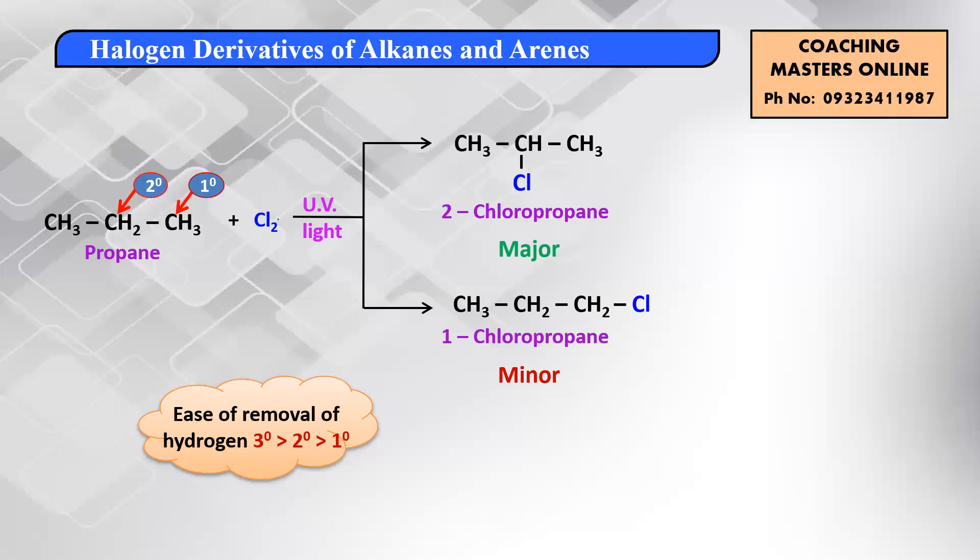This ease of hydrogen removal — tertiary > secondary > primary — is a very important rule to remember. When you understand the mechanism module next, this will become clearer. To summarize: if substitution is possible on one carbon you get one product; if on two different carbons you get two products, then determine major and minor using the tertiary > secondary > primary rule. Thank you students and happy learning!